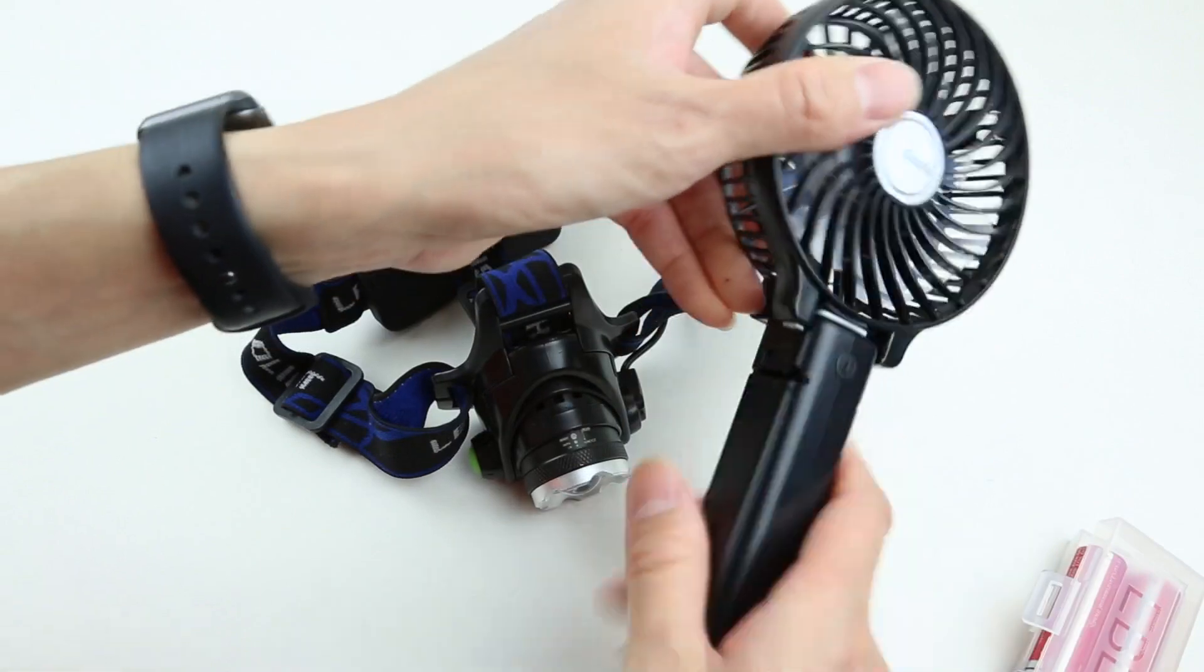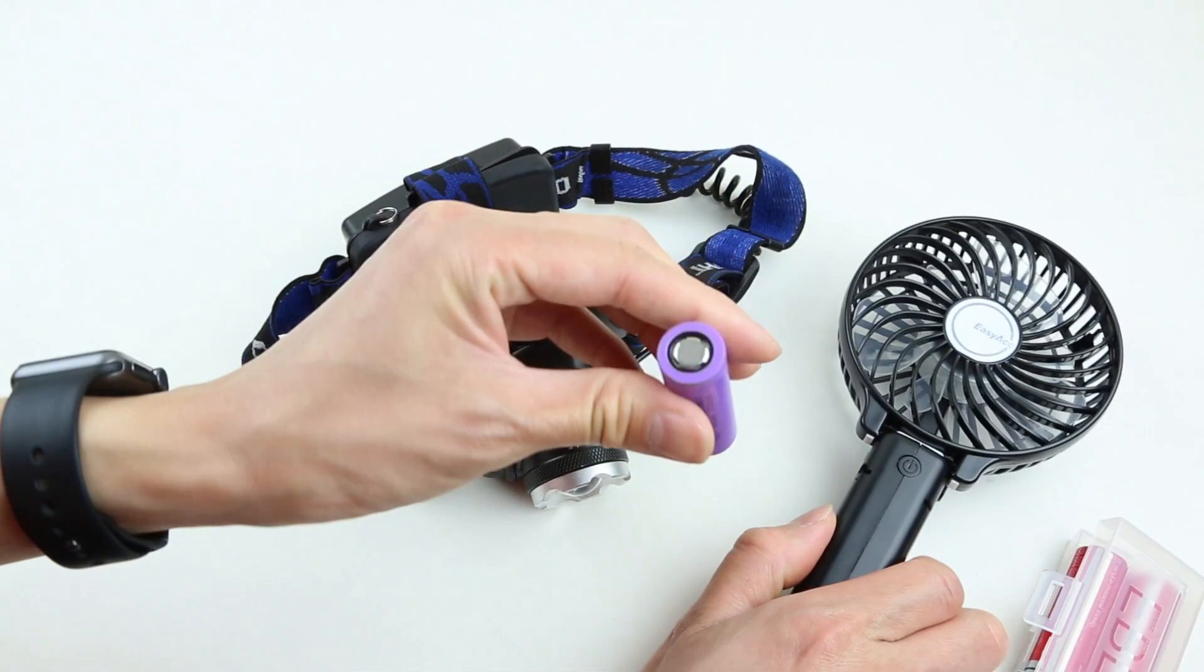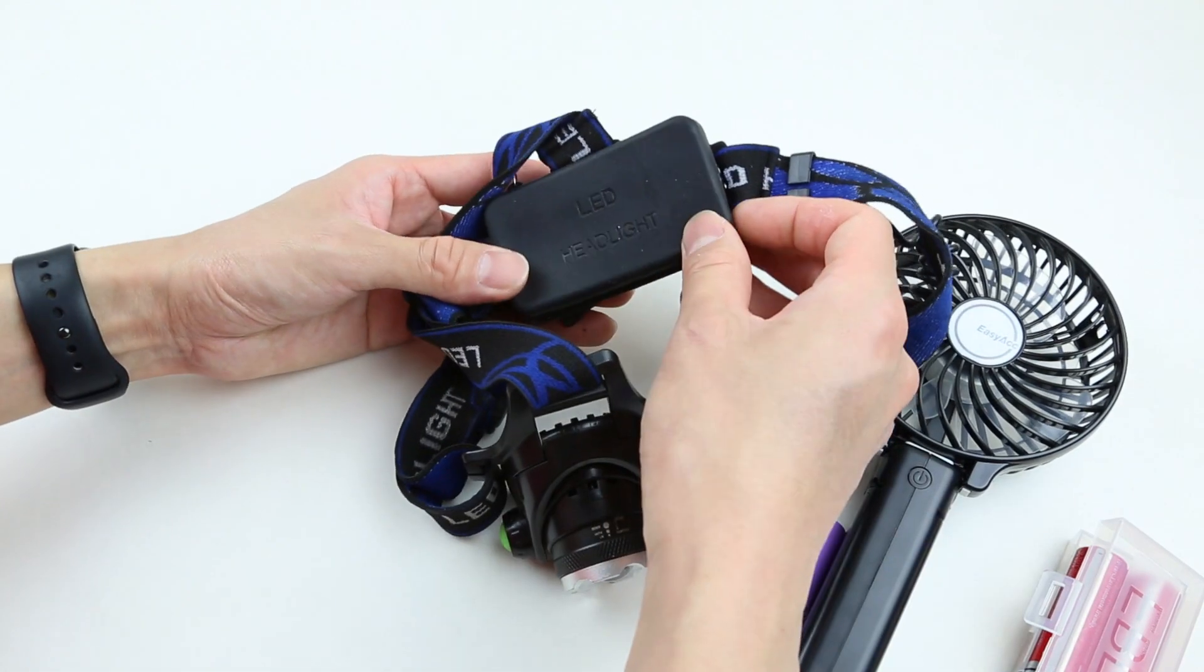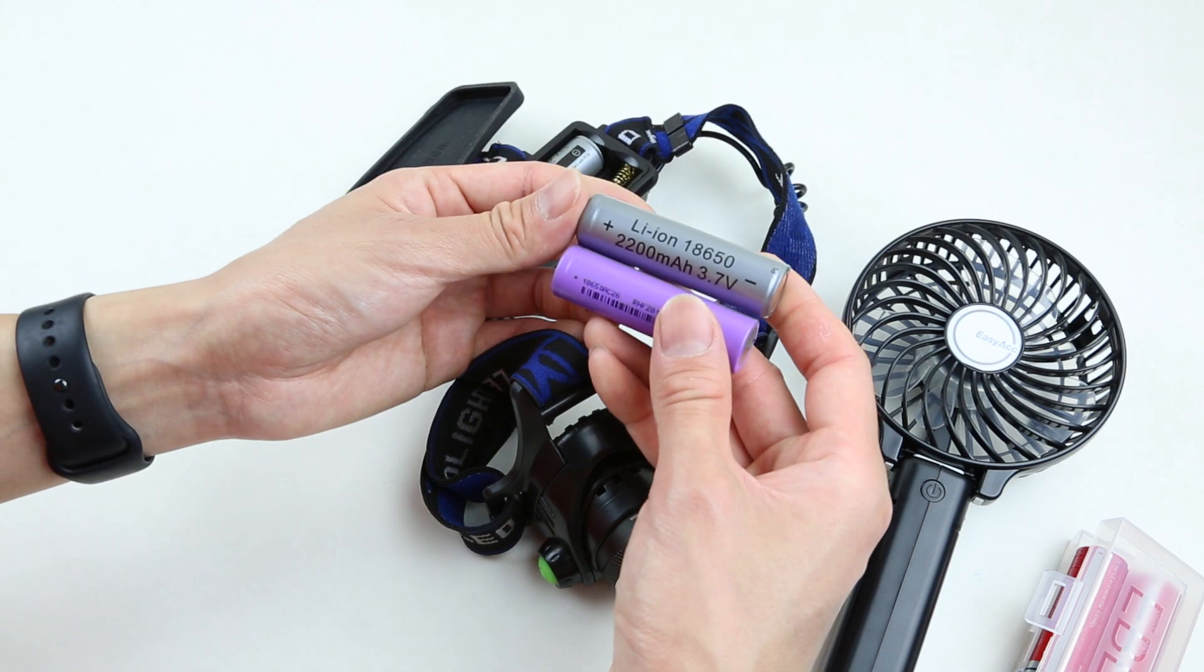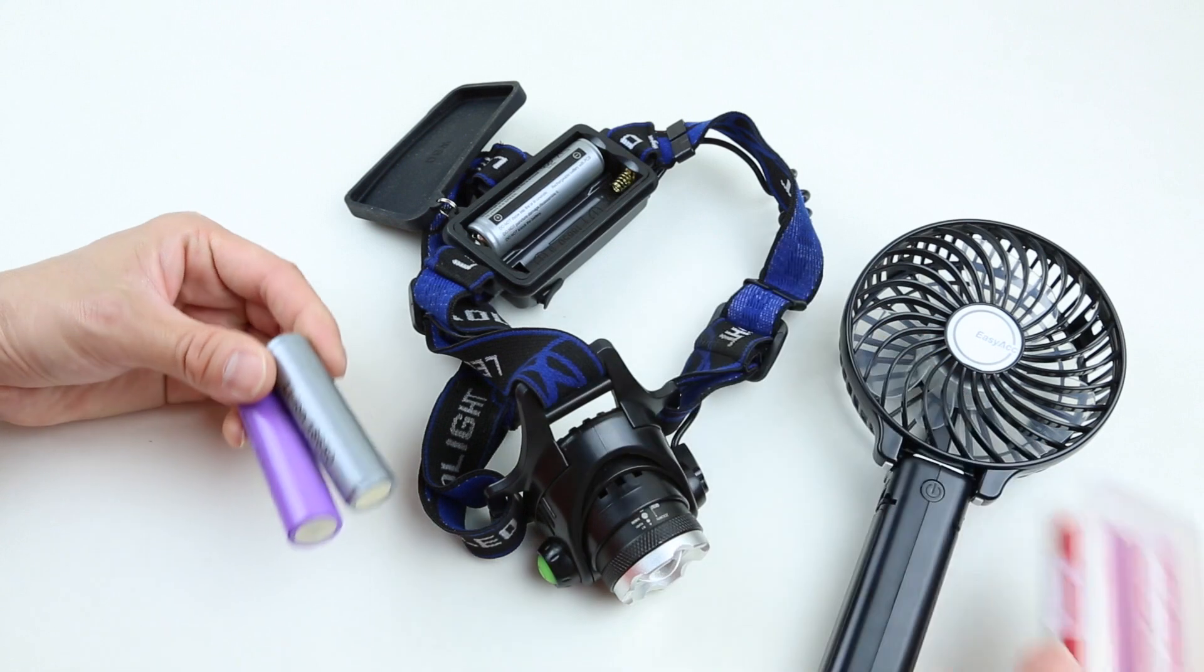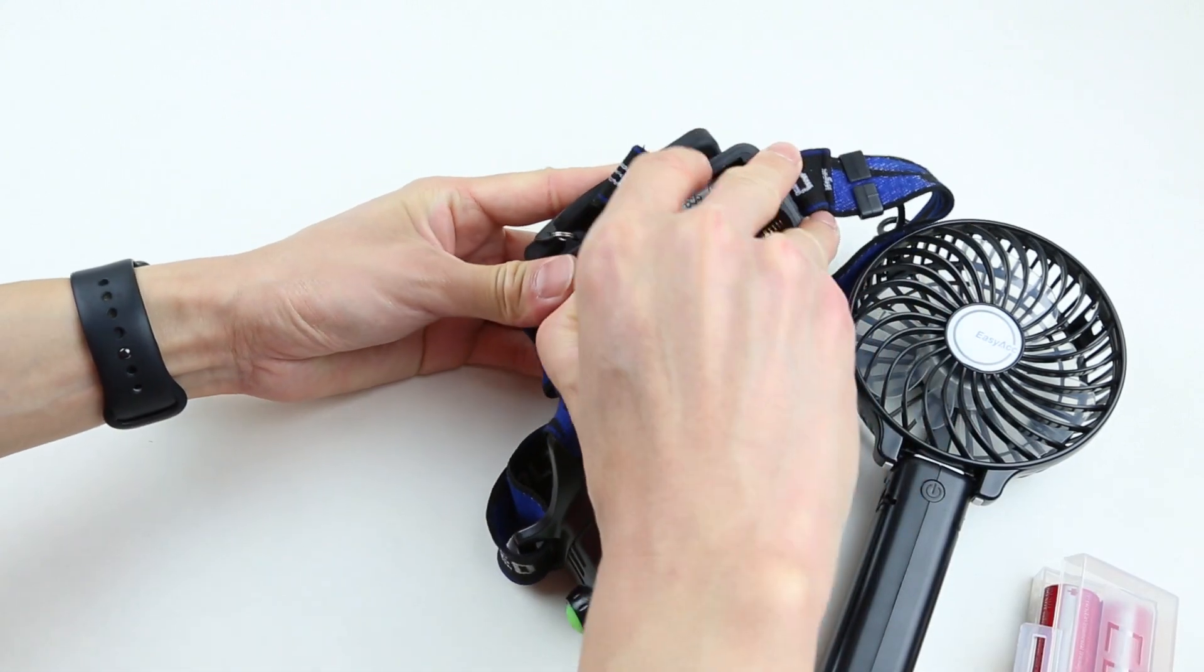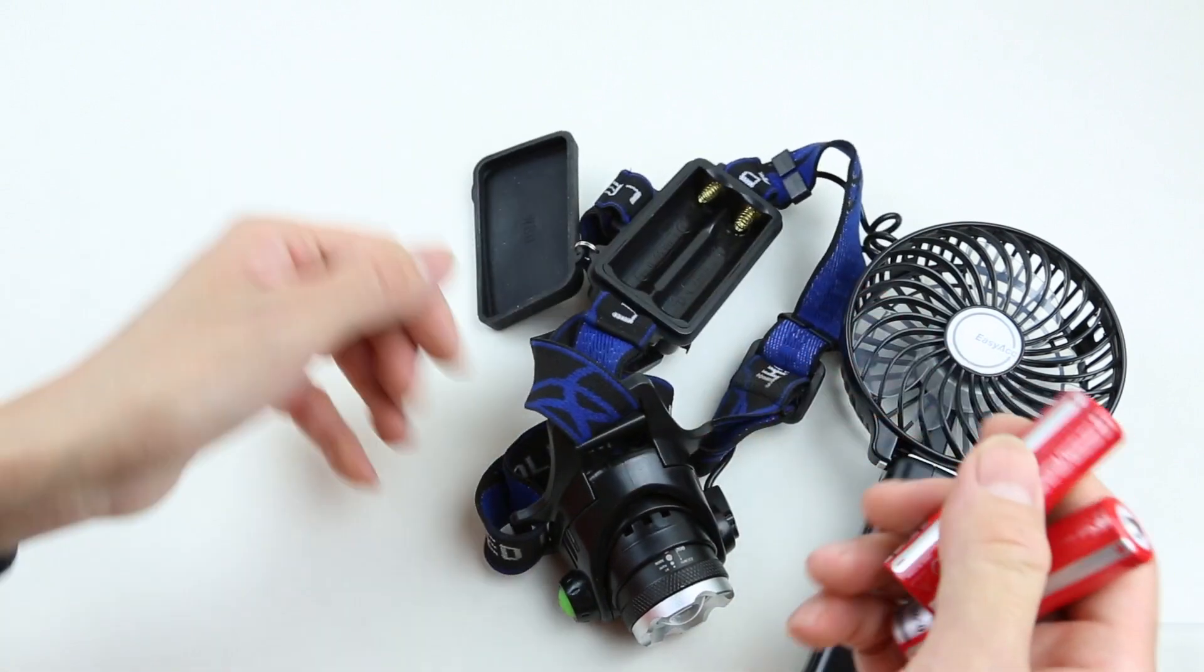When you buy these devices, they usually come with some cheap 18650 cells, like this one. This one is a flat-top design, and for the LED headlamp, this one also came with a flathead. So these batteries have a pretty standard 2200 mAh rating, which is smaller than these 3000 mAh batteries. I'm going to show you these batteries will fit just fine in these devices, so I'm going to take this one out and put these EBL batteries in there.